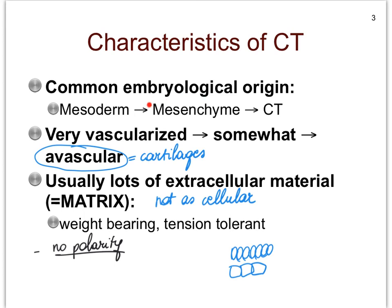Mesenchyme cells can still be thought of as stem cells because they have the ability to make all kinds of cells — namely all the different cell types needed to make connective tissues. Interestingly, we still find mesenchyme cells in our body. They are most abundant in an embryo, but we retain these stem cells throughout our lives, allowing us at any age to still use these mesenchyme cells to make connective tissue.